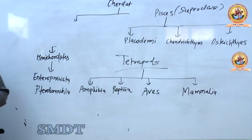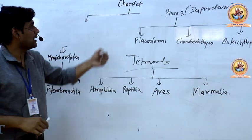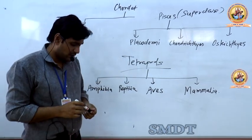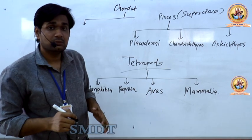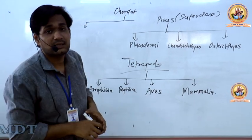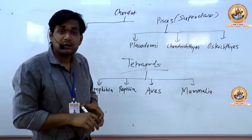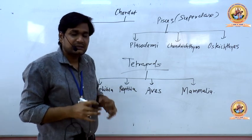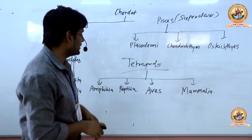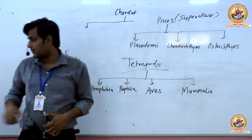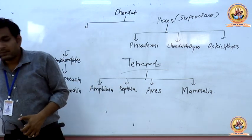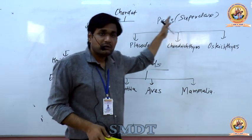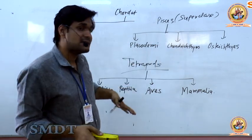This was the basic classification. Phylum Chordata is a very big phylum with different sub-phylums, classes, and superclasses, so that we can divide organisms with similar characters into smaller groups and understand them and know their characters. Now let's see the basic differences between Protochordata and Vertebrata — what are the actual differences?